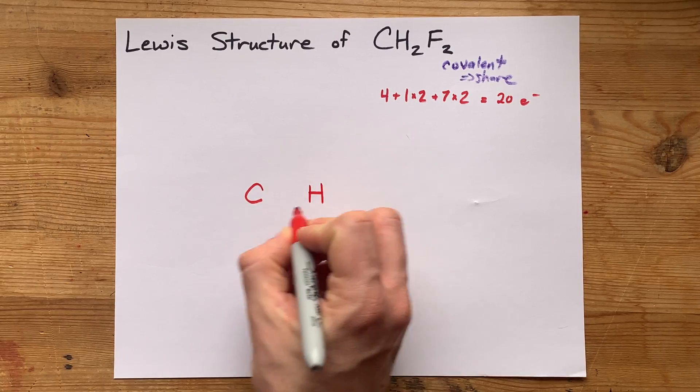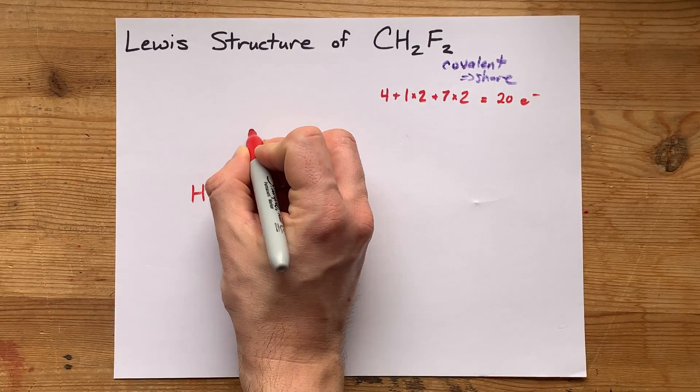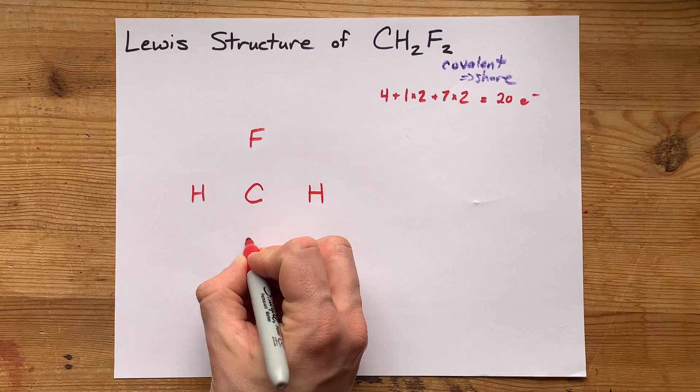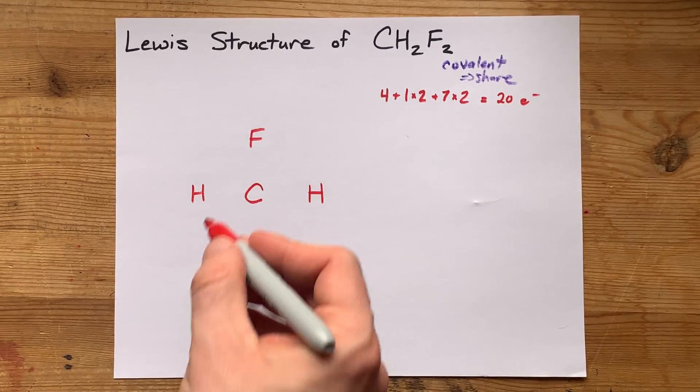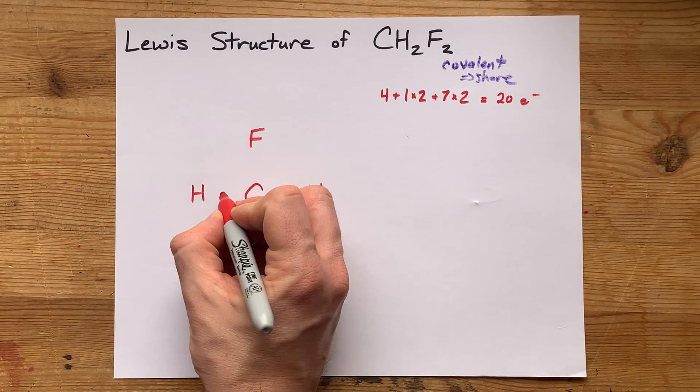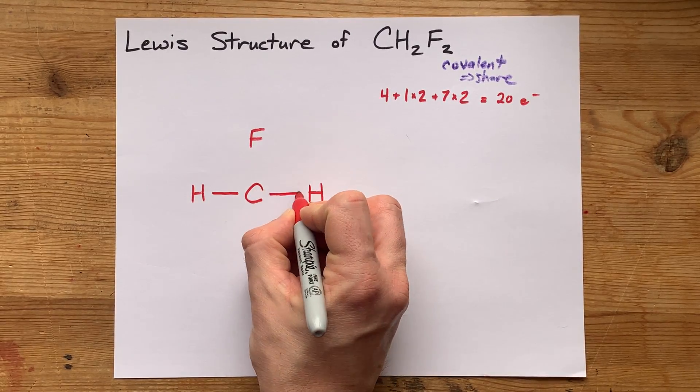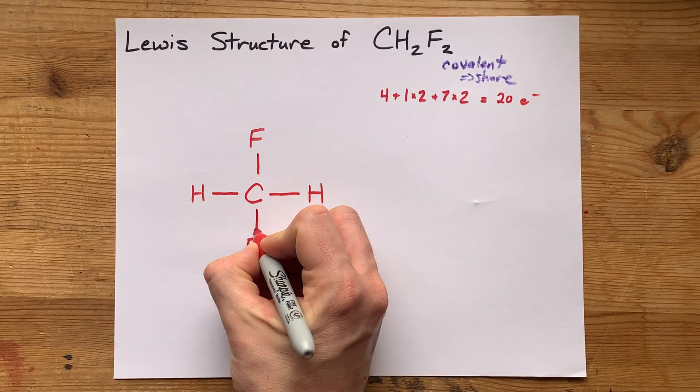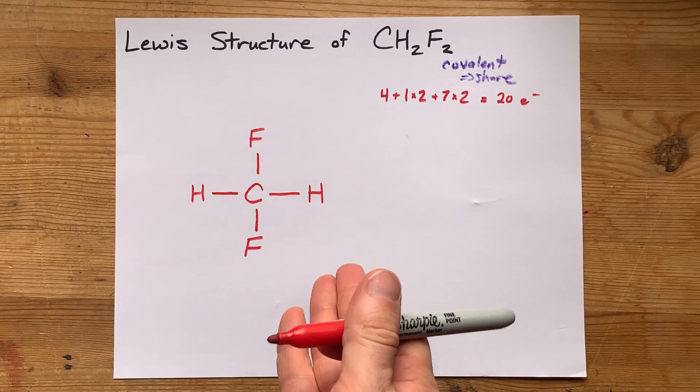I'm going to surround it with hydrogens and fluorines. It doesn't really matter which of these I put in which place, as long as there's two of each, because it says there's two of each in the formula here. And I'm going to single bond the central atom to each of the outer atoms, because if they weren't connected, it wouldn't be a molecule.